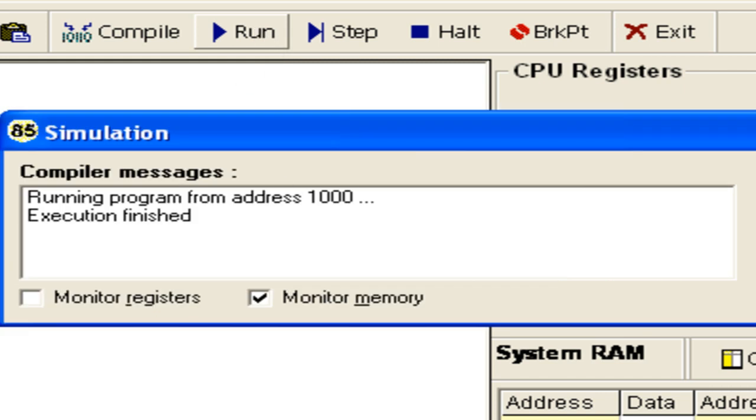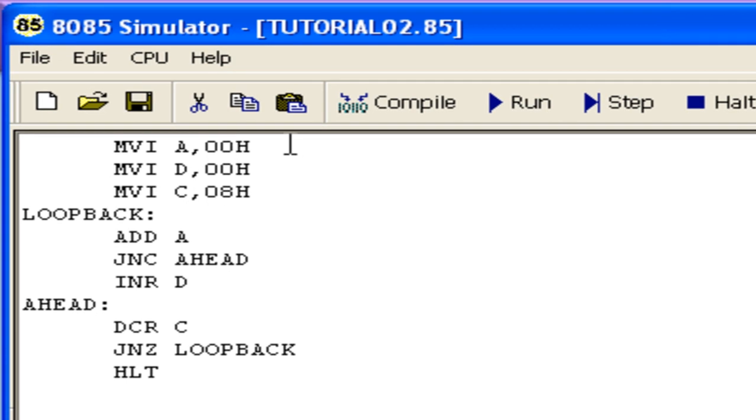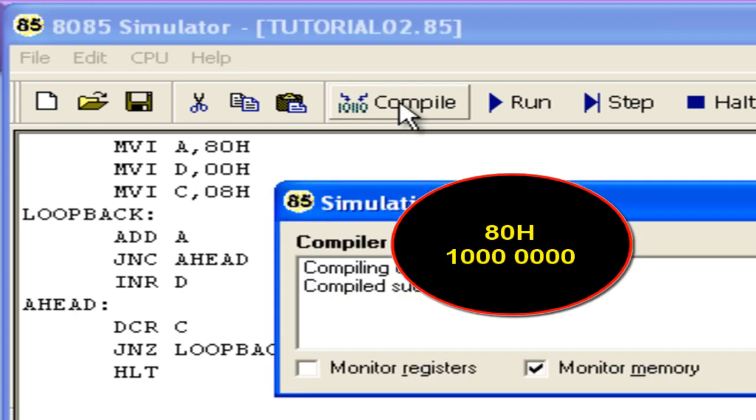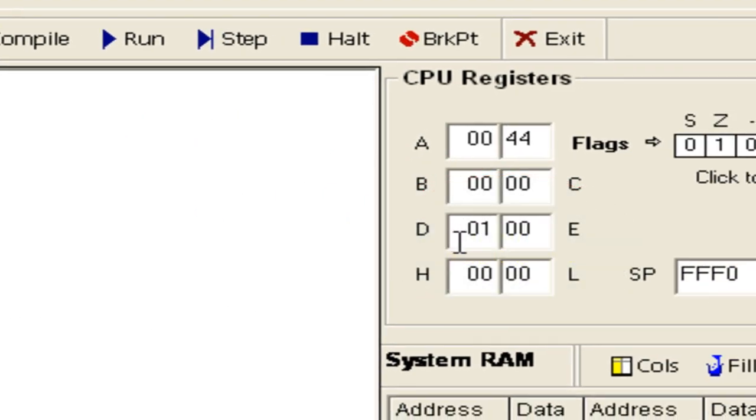Say for example, I make it 00. No 1s. Compile the code. Execute it. The value of D is 0. There are no 1s. Let us make it 80. That means it has only 1 number of 1s. Compile. Run. And the value of D is 1.